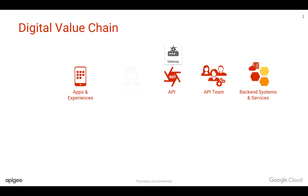Once you've built the APIs, you need to start thinking about the most important layer — the consumption layer. That is where the app developers come into the picture. You need to think about how you can onboard your internal developers, partner developers, or public developers into your ecosystem, and how developer and application onboarding can be self-service to reduce friction of consumption.